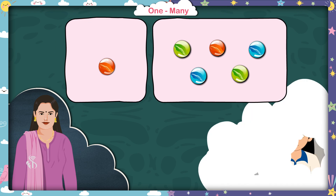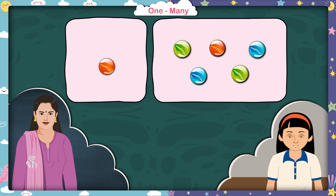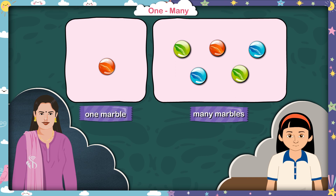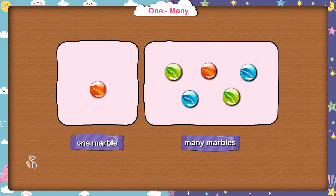Look at this picture now. You can see many marbles on the right and only one marble on the left. Tell me, if I want to circle many marbles, where should I draw that circle? Who will tell me? Madam, circle the picture on the right. Very good, children. You are right.